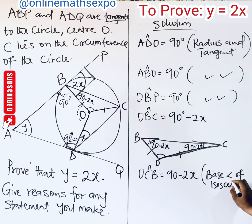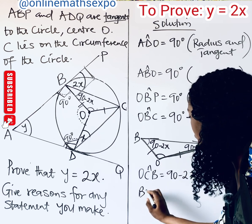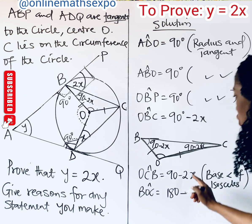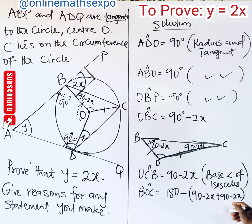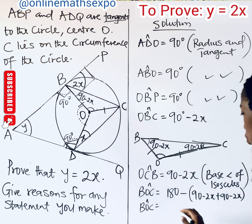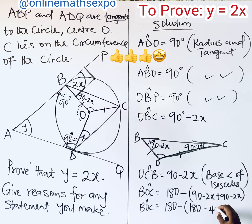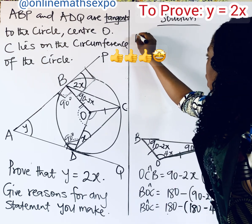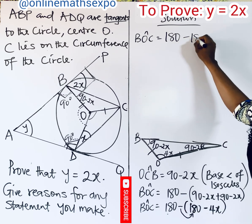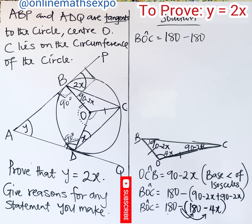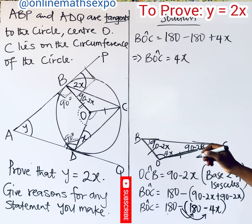Now we can find angle BOC. The total angles in a triangle sum to 180 degrees. So angle BOC = 180 − (90 − 2x + 90 − 2x) = 180 − 180 + 4x = 4x. Therefore angle BOC = 4x.